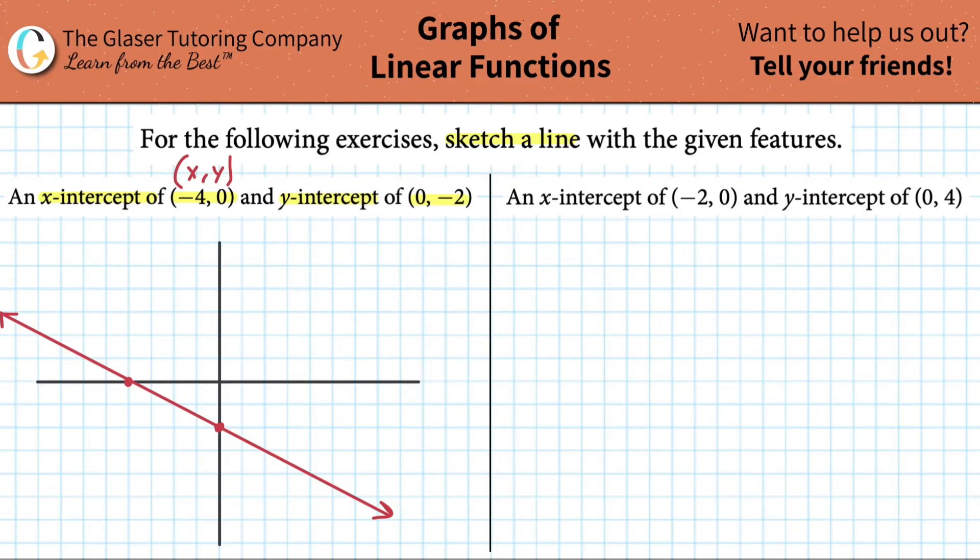Let's fly through the next one. So the next one is now saying we have an x-intercept of negative 2, 0 and a y-intercept of 0, 4. So quickly draw your axes. I'm actually just going to simply copy this. I'm cheating a little bit here.